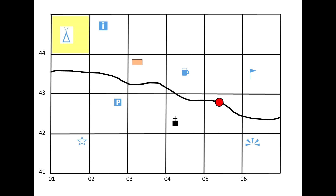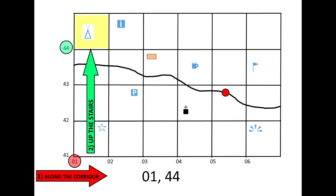Our last example for four-figure grid references is the campsite. We're going to start off by going along the corridor — that would be zero one — and then up the stairs, which would be four four. So the campsite is zero one, four four.